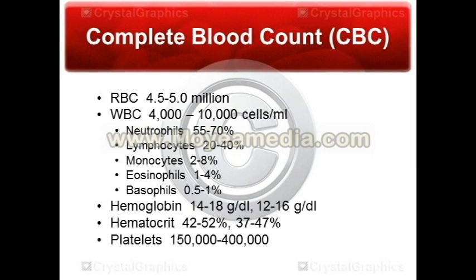The first one listed is red blood cells. Your red blood cells carry the oxygen in your body, so they're vitally important. However, they're not as important in terms of measurement as your hemoglobin and hematocrit. The hemoglobin is what actually binds to the oxygen, and that's part of the red blood cell. For reference, the red blood cell count is normally about 4.5 to 5 million, though this varies by institution.